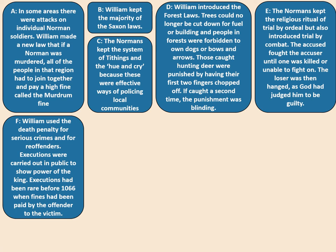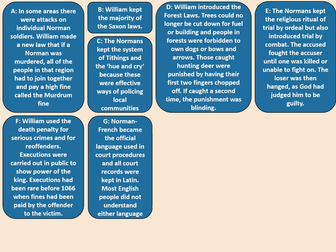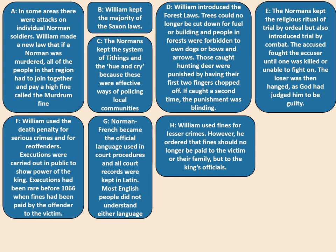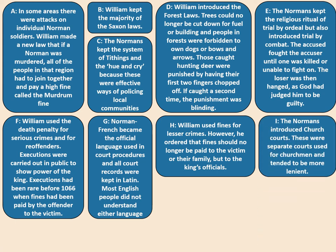Card F: William used the death penalty for serious crimes and re-offenders. Executions were carried out in public to show the king's power. Before 1066, executions had been rare — fines were paid to the victim rather than punishments being physical. Card G: Norman French became the official language in court procedures and all records were kept in Latin — most English people could not understand either, putting them at a significant disadvantage. Card H: William used fines for lesser crimes but ordered they be paid to the king's officials, not to the victim or their family. Card I: the Normans introduced church courts, separate courts for clergymen that tended to be more lenient.